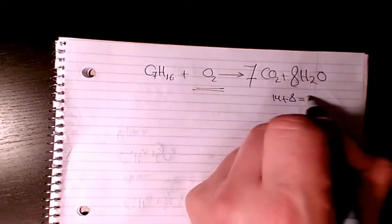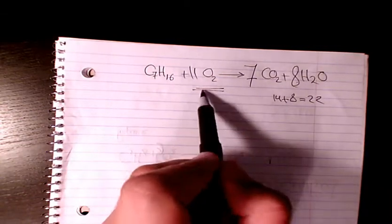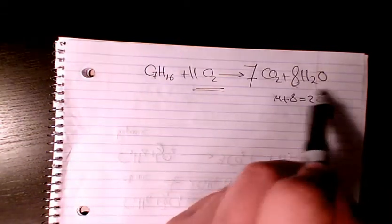It's going to be 22. So we need to have 11 here. 11 times 2 is going to be 22, and here we have 14 plus 8 is 22. So that's balanced.